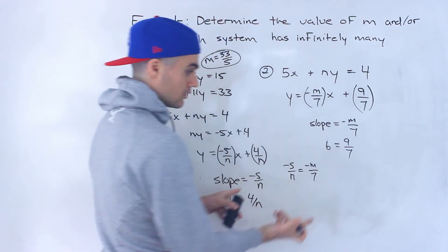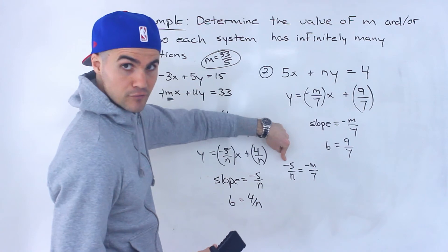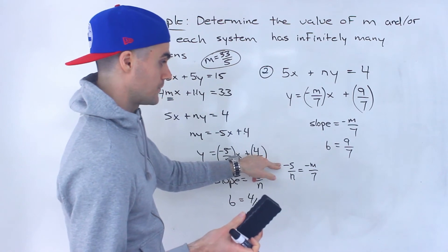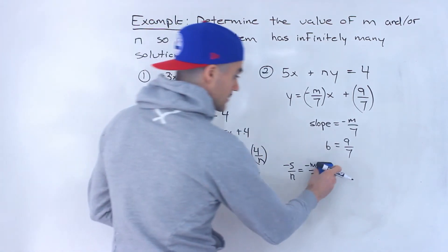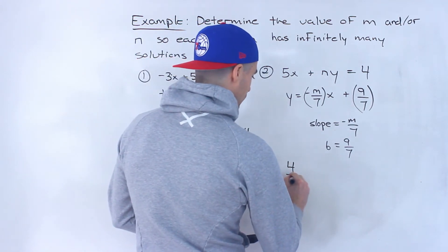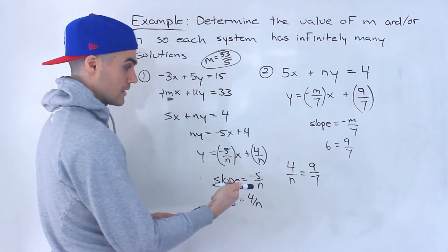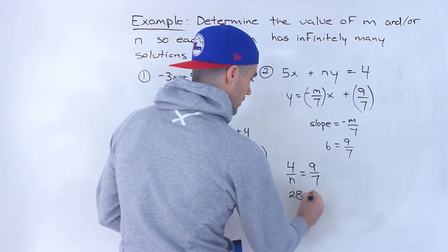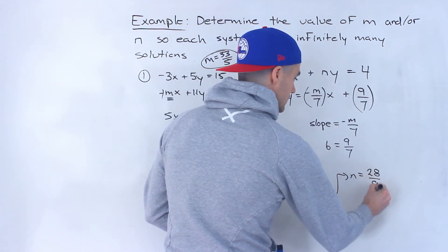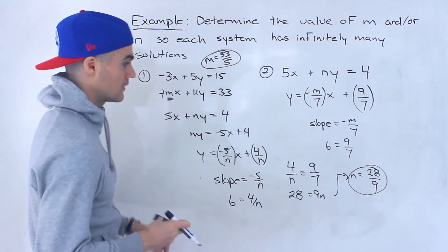If we cross-multiply the slope equations, we'd have mn equals 35, and there are infinitely many combinations of m and n that can make this work. So instead, we can make the b values equal. We'd have 4 over n equals 9 over 7, because the b values have to be equal if it's going to be the same line. Cross-multiplying gives us n equals 28 over 9. So we got one of the constants by making the b values equal.